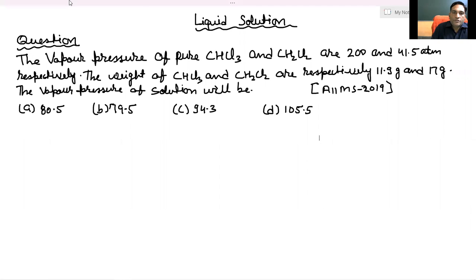The vapour pressure of pure CHCl3 and CH2Cl2 are 200 and 41.5 atm respectively. The weight of CHCl3 and CH2Cl2 are respectively 11.9 g and 17 g. The vapour pressure of solution will be. This is a Raoult's law based question.